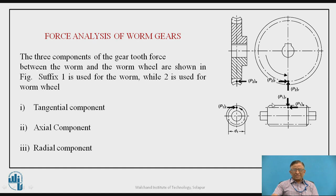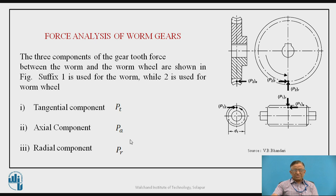The resultant tooth force acting on the meshing teeth is resolved into three components: tangential (Pt), axial (Pa), and radial (Pr). The suffix 1 is used for components acting on the worm (e.g., P1t is tangential force on the worm), and suffix 2 is used for the worm wheel (e.g., P2t is tangential force on the worm wheel).